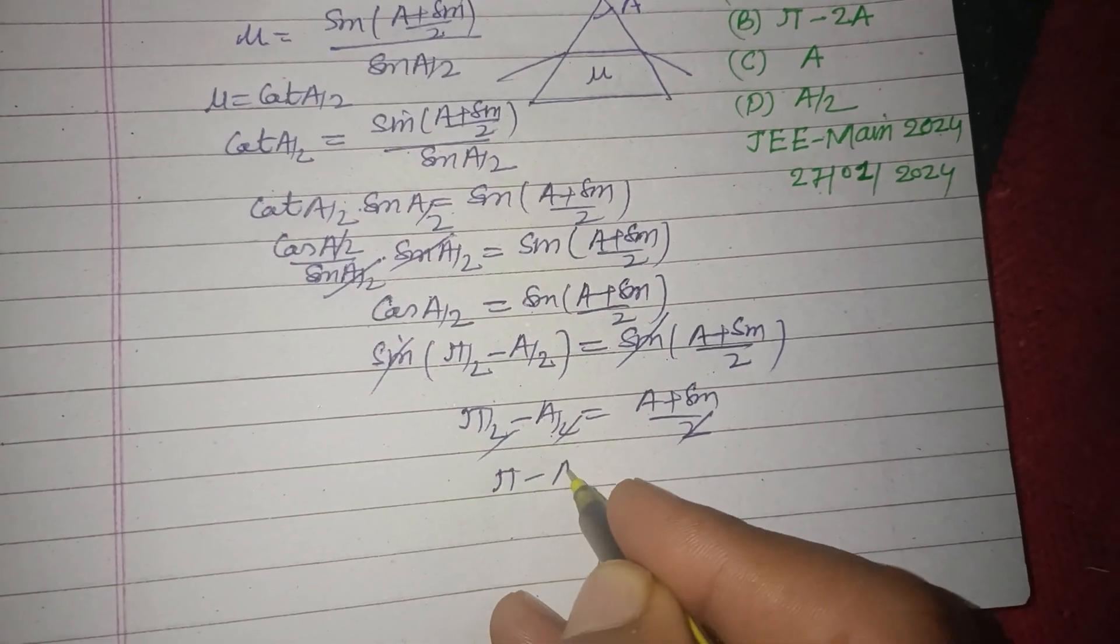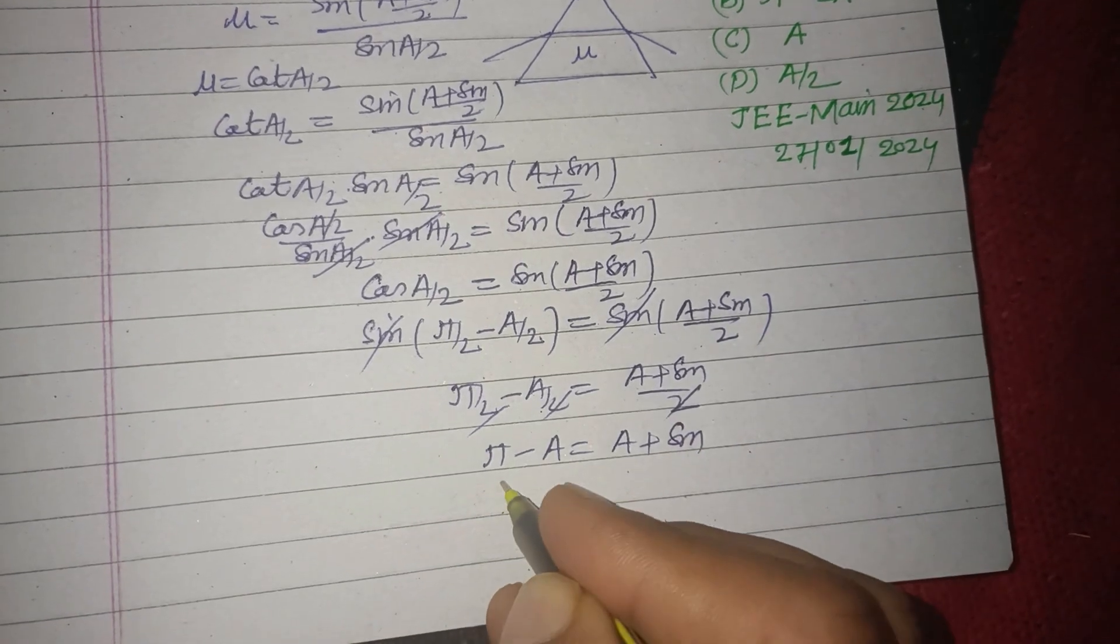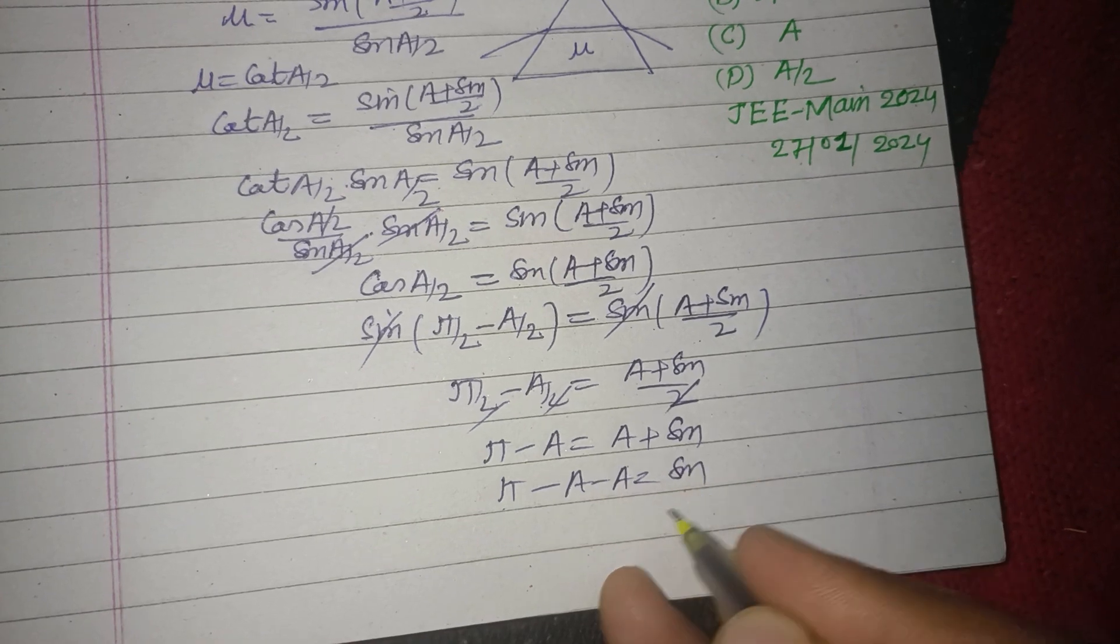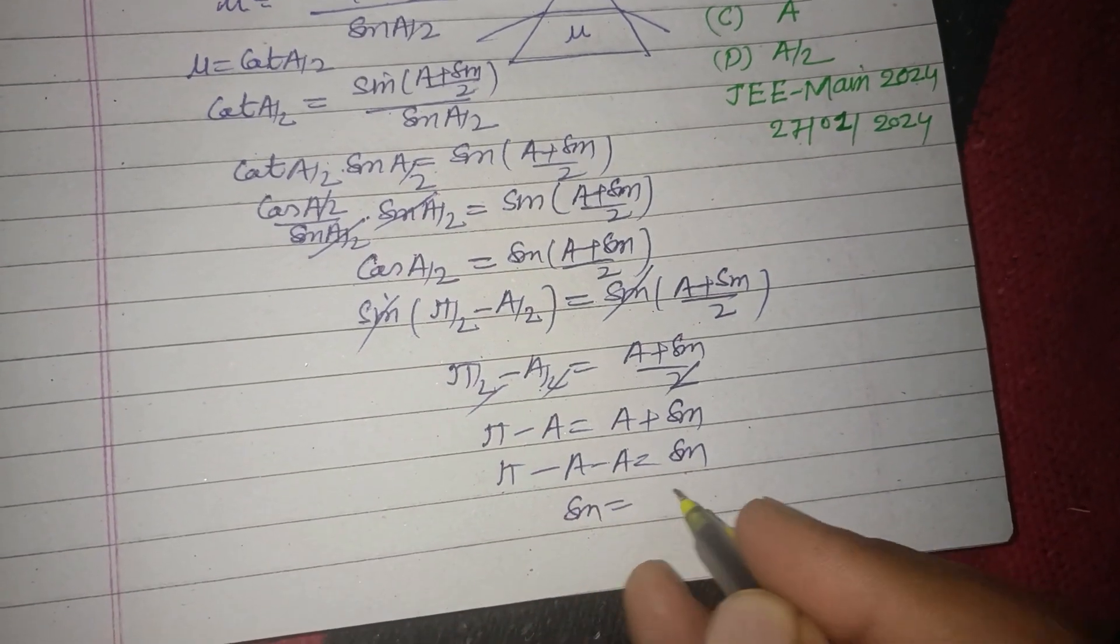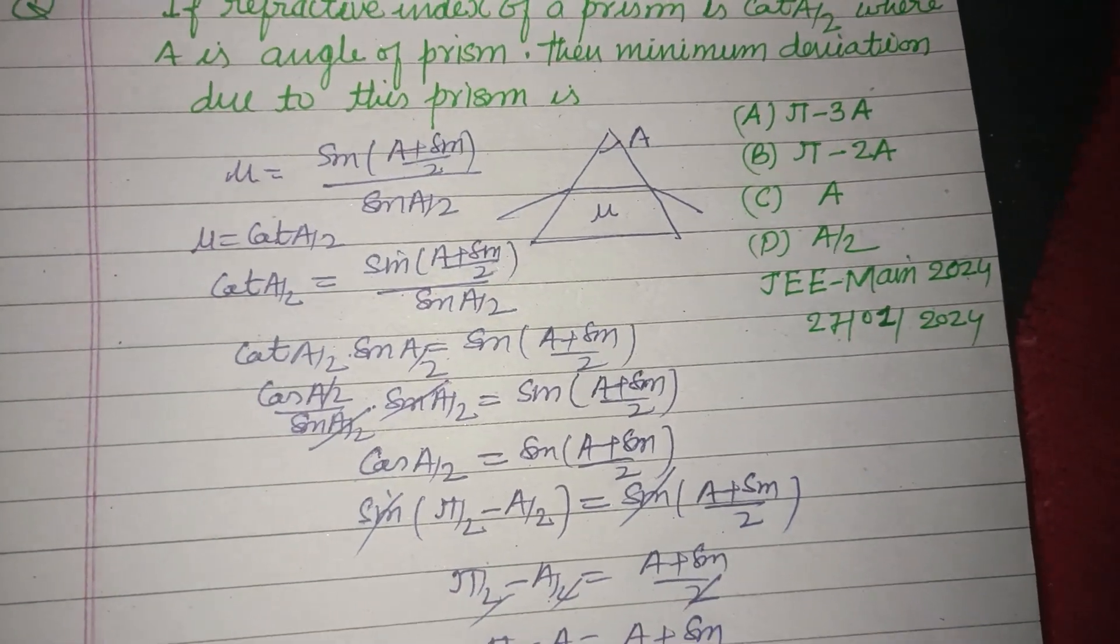Therefore π minus A minus A equals δm. So the magnitude of minimum deviation is π minus 2A, which is found in option B.